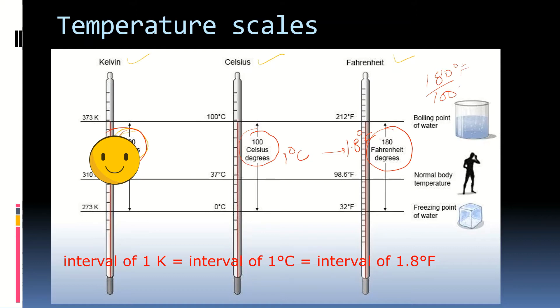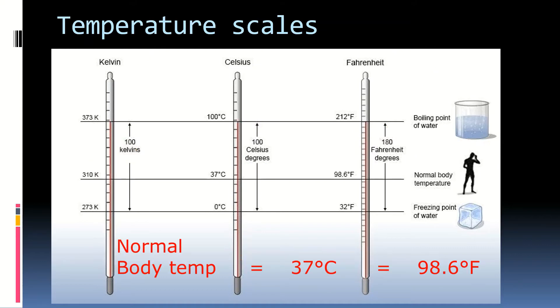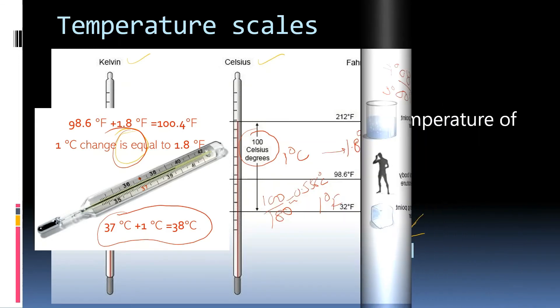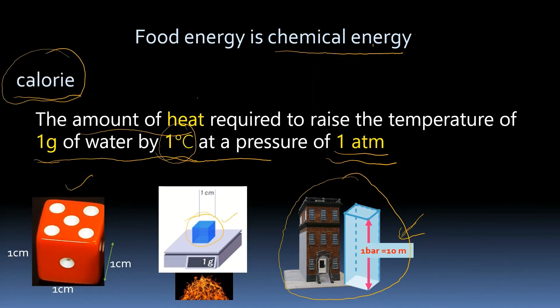We know that the body temperature is around 37 degree Celsius or 98.6 degree Fahrenheit. Do you ever had fever around 100.4 degree Fahrenheit? Then you must have experienced 1 degree Celsius rise in body temperature. So now you know what is a calorie. This is the amount of heat required to raise the temperature of 1 gram of water through 1 degree Celsius at 1 atmospheric pressure.